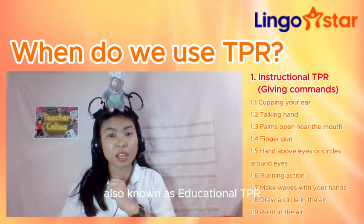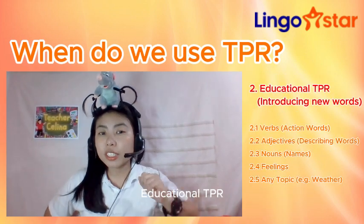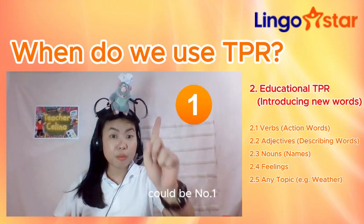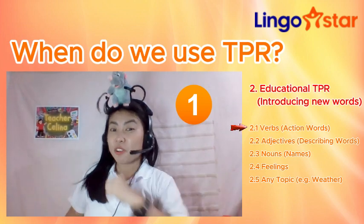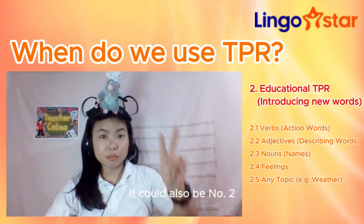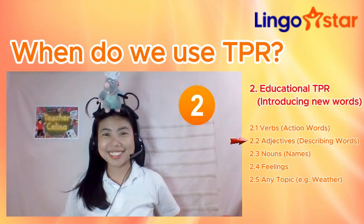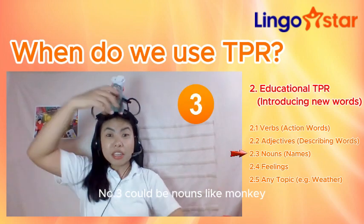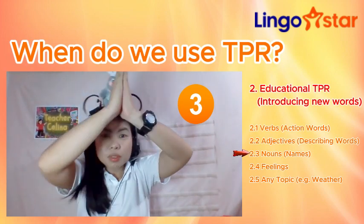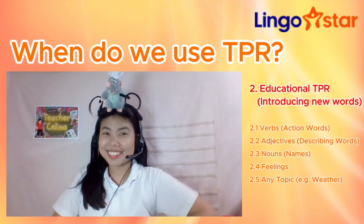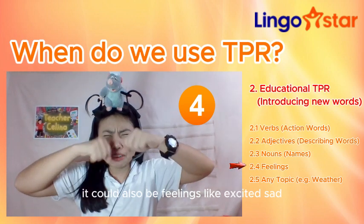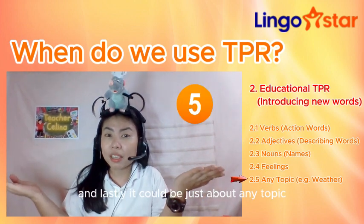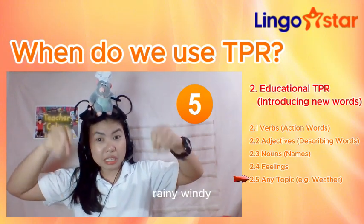Now let's move on to introducing new words, also known as educational TPR. Educational TPR is when we use TPR to introduce new words or to teach keywords from our lessons. Educational TPR could be: number one, verbs like fly, run, or brush; number two, adjectives like big, small, or strong; number three, nouns like monkey, baby, or shark; feelings like excited, sad, or angry; and lastly, it could be just about any topic, like the weather — sunny, rainy, windy.